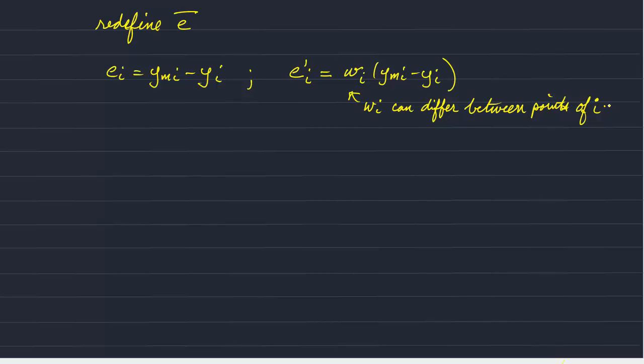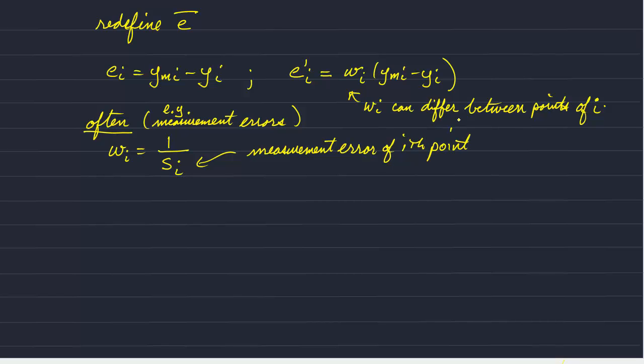Okay, so often, if we're dealing with measurement errors, the weight of the ith point is inversely proportional to the measurement error. And so we can write this in vector form as vector E prime is equal to the matrix W, the matrix of weights, times our original misfit, where the matrix W is a diagonal matrix with the weights on the diagonals. And we have n points, so we have n weights.